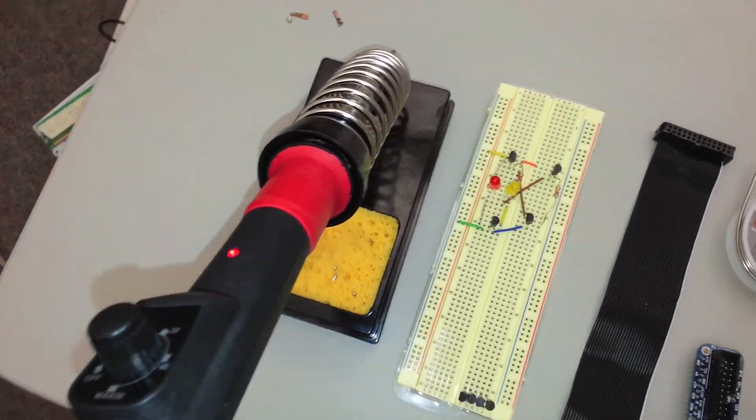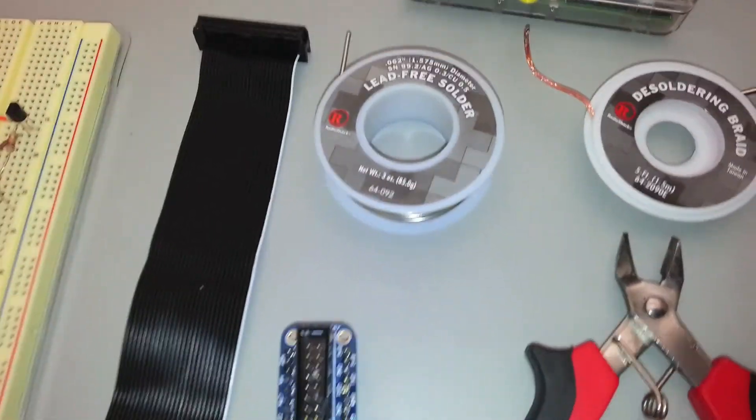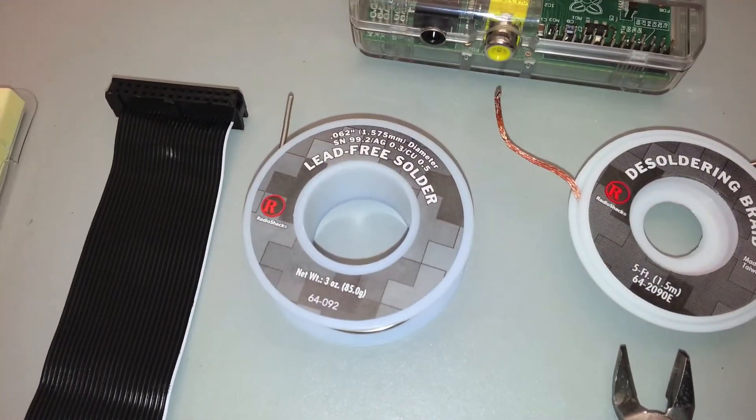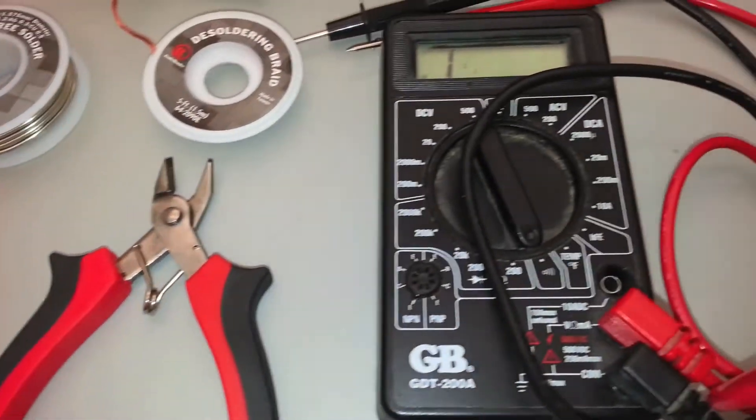Okay, so here we have everything you need: your soldering iron, a breadboard, a breakout cobbler kit from Adafruit. As you can see I put this one together already. Need some solder, some de-soldering braid, some clippers, and your voltmeter.